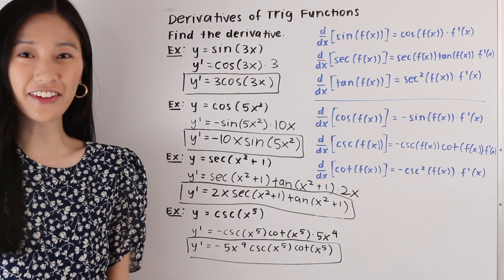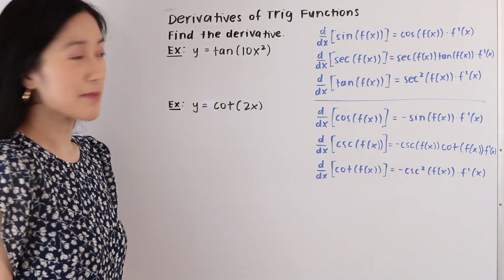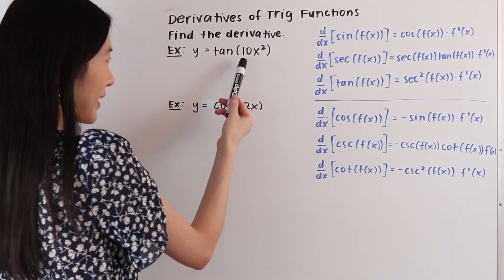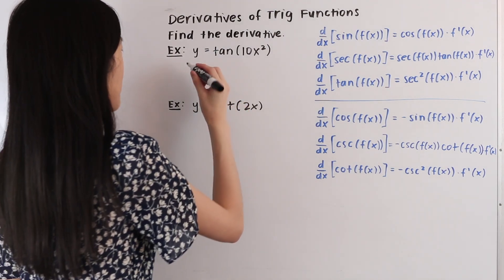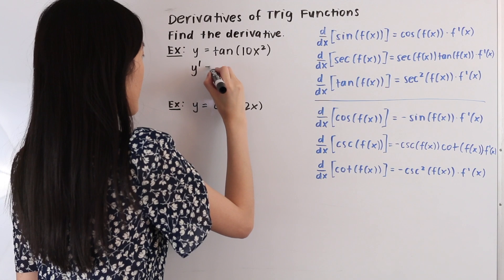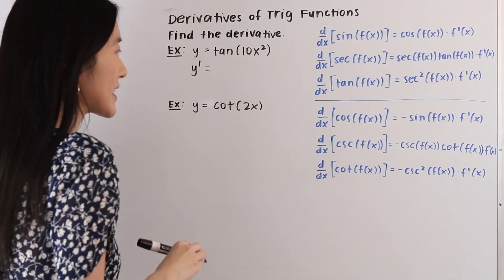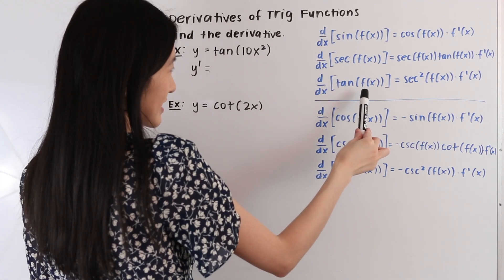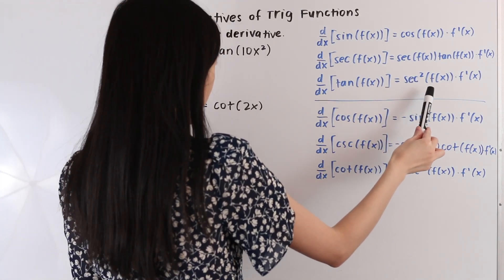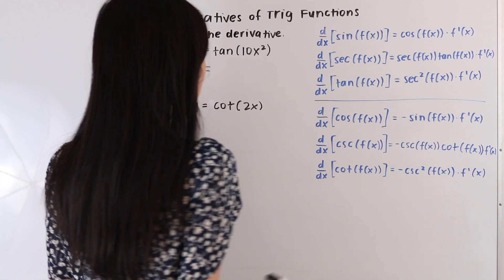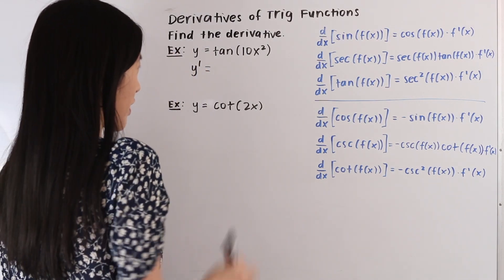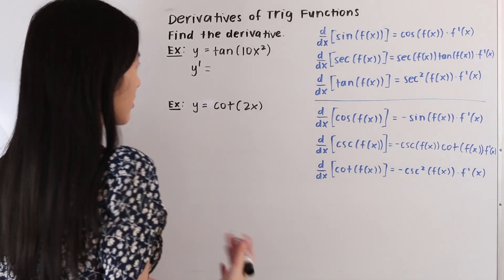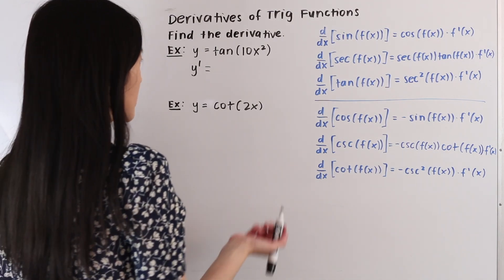And now let's go ahead and take a look at a few more examples. So in this next example here, we have the function y is equal to tangent of 10x squared. And so let's go ahead and take its derivative. So we have y prime is equal to, and we can see from our table that the derivative with respect to x of tangent of f of x is equal to secant squared of f of x times f prime of x. So the first thing that we're going to do is take the derivative of our trigonometric part, and then we're going to keep the angle the same. So the derivative of tangent is equal to secant squared.